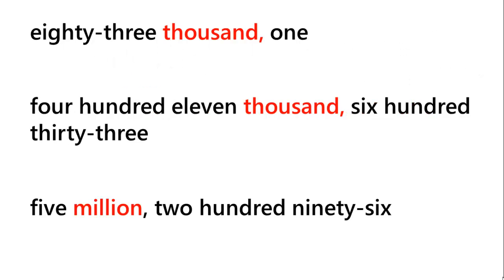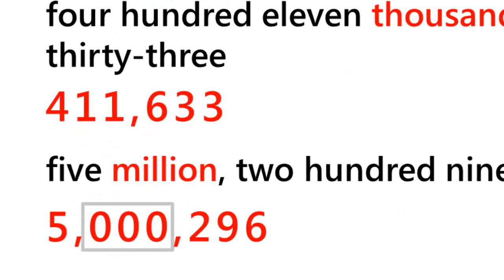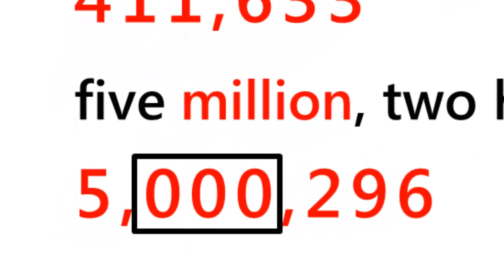Now let's try writing the numbers from the given words. For 83,001, we write 83,001. For 411,633, we write 411,633. And for 5,000,296, we write 5,000,296. The zeros show that there are no numbers in the thousands period.